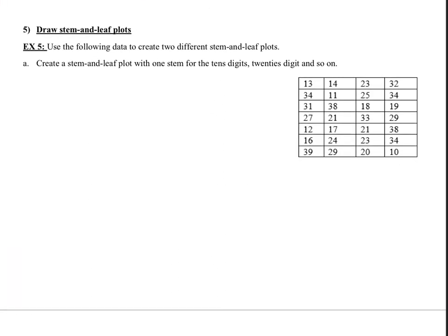Objective 5: draw stem and leaf plots. We'll use the following data to create two different stem and leaf plots and compare them. The first plot uses one stem per tens digit — so we have stems 1, 2, and 3 for the tens, twenties, and thirties. We write only the ones digits next to each stem.